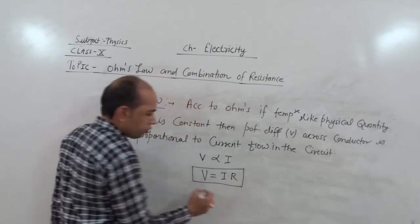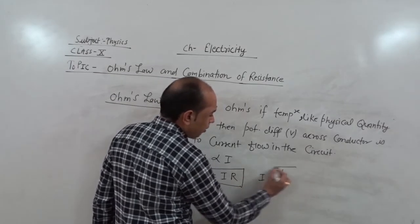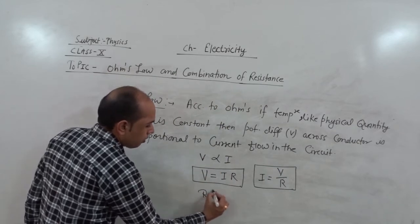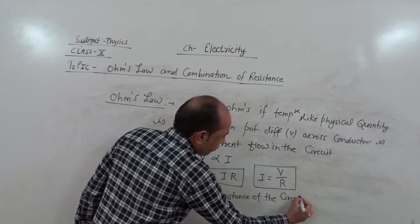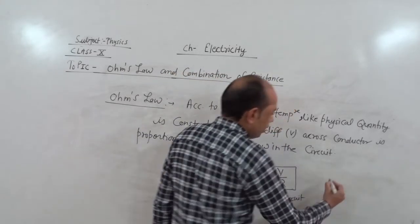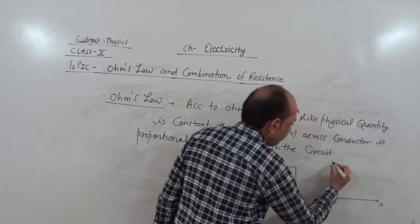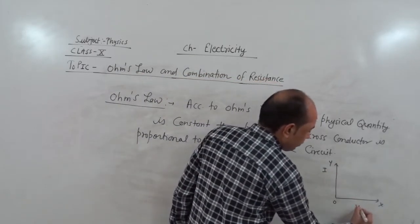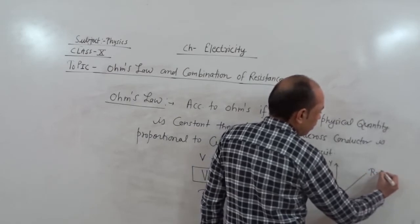This relation is called Ohm's law. It also states that current I is equal to V divided by R, where R is called the resistance of the circuit. When we plot the graph between current and voltage, we take two axes X and Y. Because of the proportional relation between V and I, when voltage and current are plotted it gives a straight line, which indicates R equals the resistance.